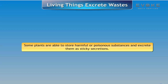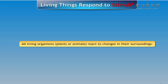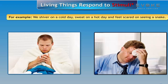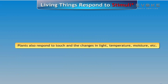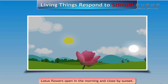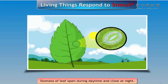Living things respond to stimuli. All living organisms, whether plants or animals, react to changes in their surroundings. For example, we shiver on a cold day, sweat on a hot day, and feel scared on seeing a snake. Plants also respond to touch and changes in light, temperature, and moisture. Lotus flowers open in the morning and close by sunset. Stomata of a leaf open during daytime and close at night.